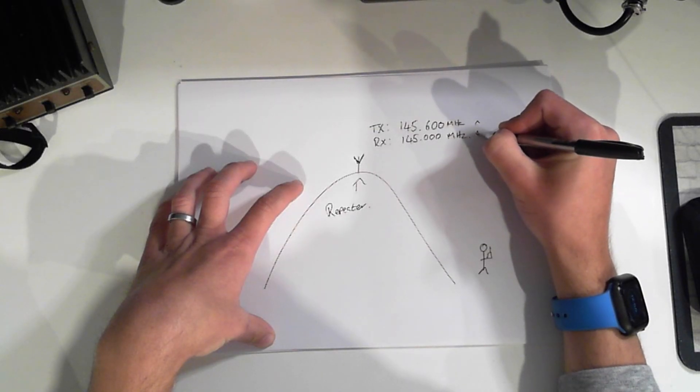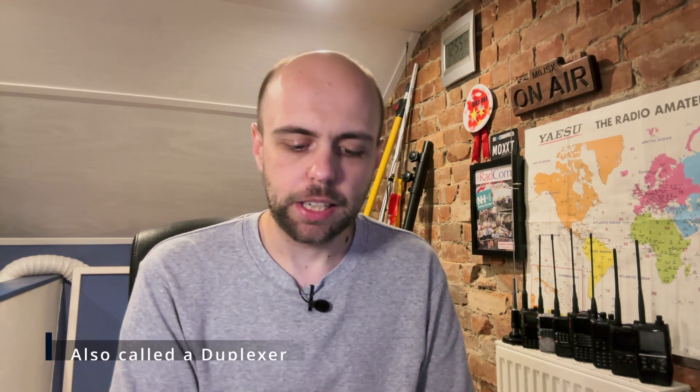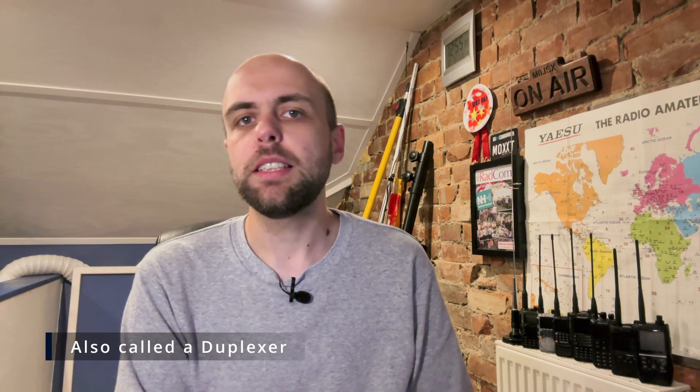The problem with a traditional repeater is that because we're only looking at 600 kilohertz of separation, we need to use something called a cavity filter to make sure that our transmitter doesn't interfere with our receiver. A cavity filter is expensive, quite big, and also quite delicate in the fact that you have to tune it in situ — because moving it can affect its tuning. You have to tune it in place and leave it, and if you move it, you'll have to check and make sure it's still okay, which is a bit of a faff.